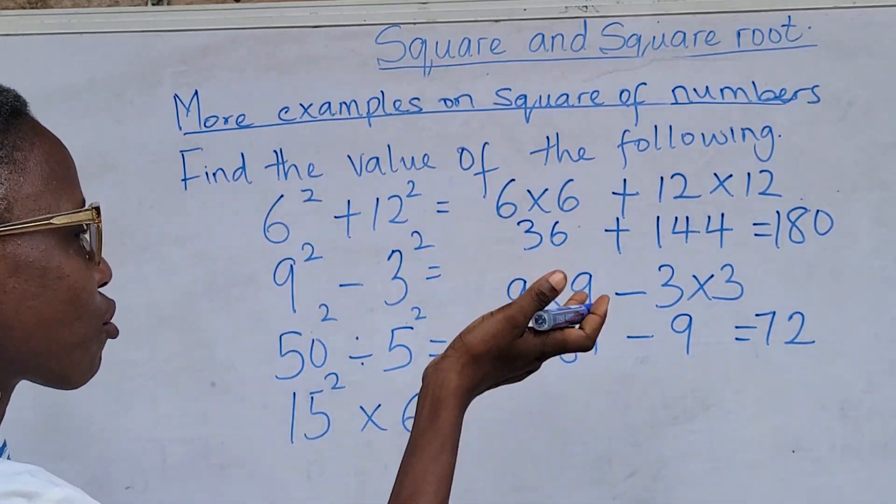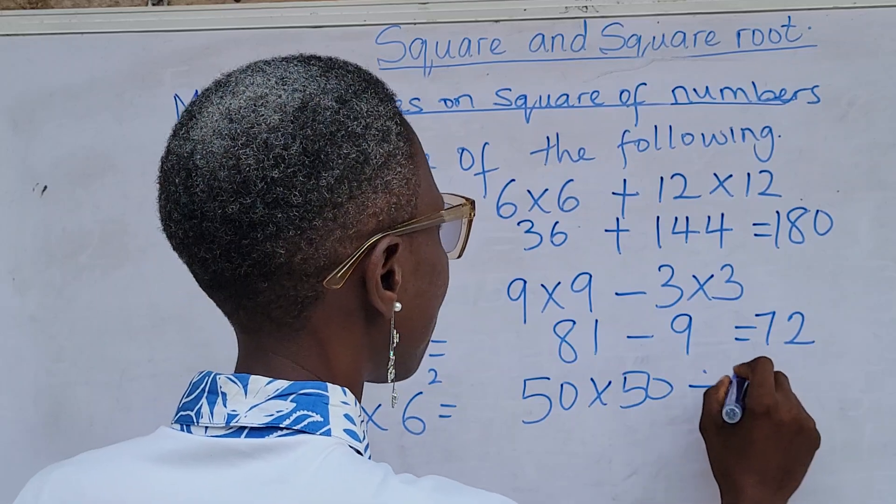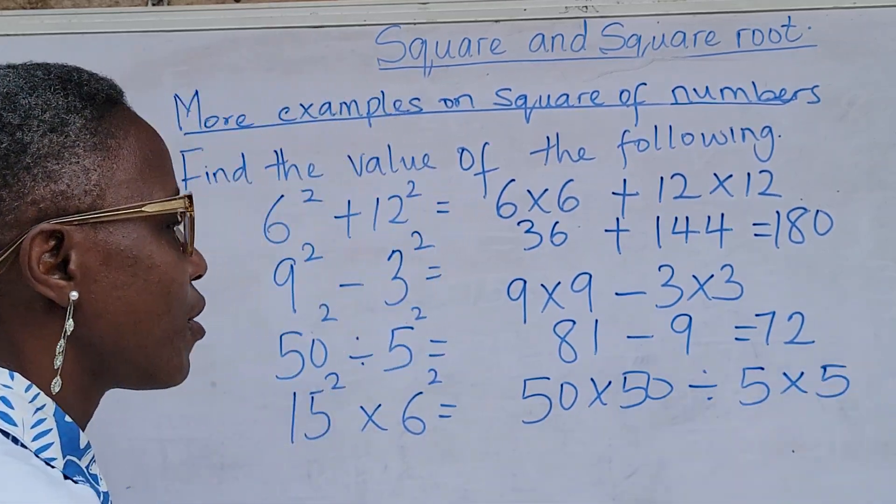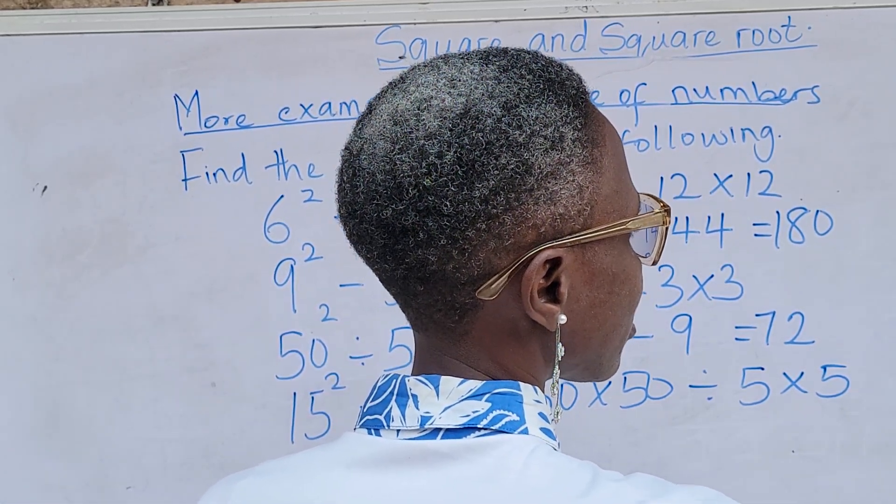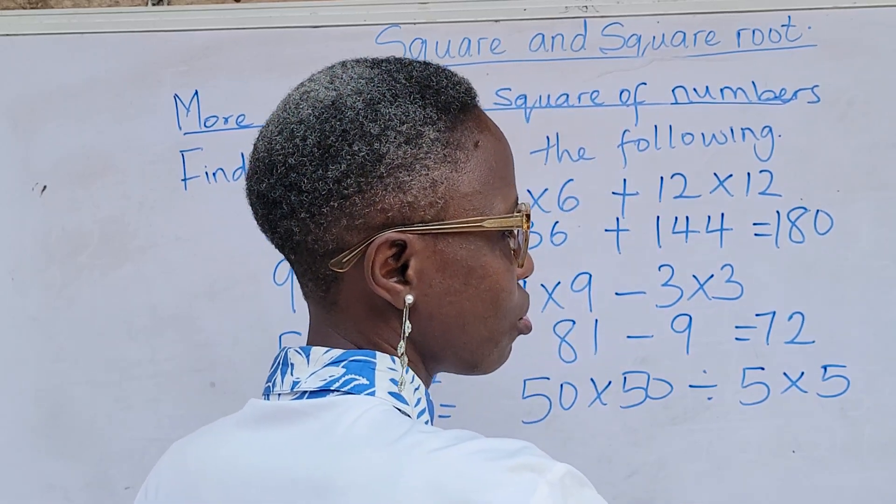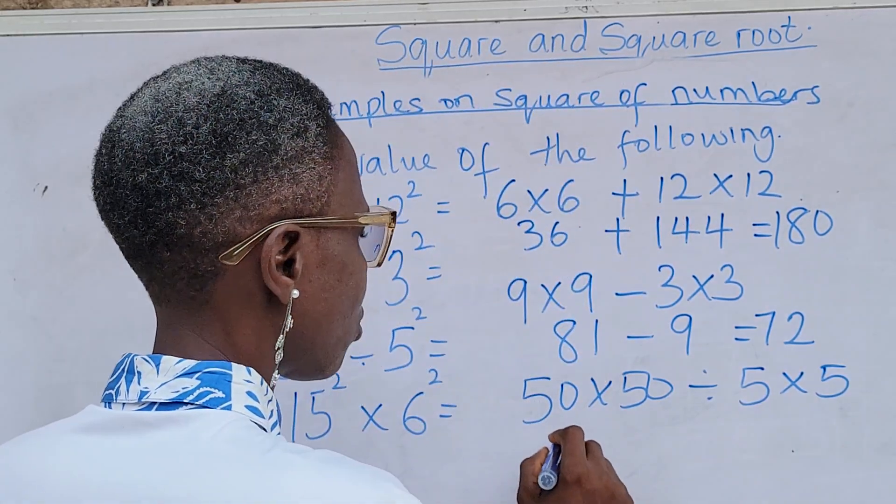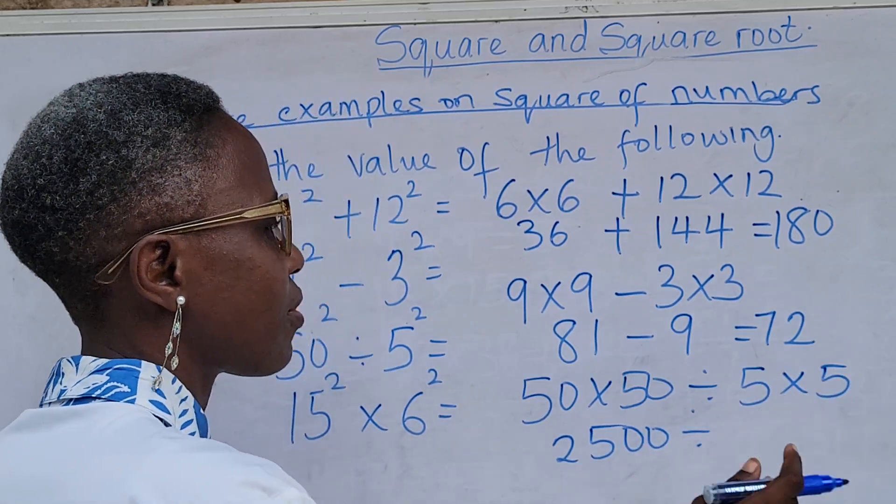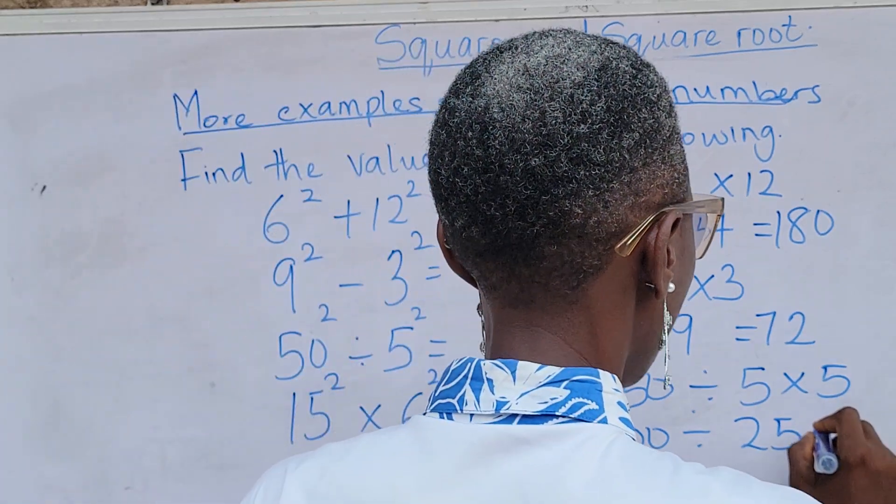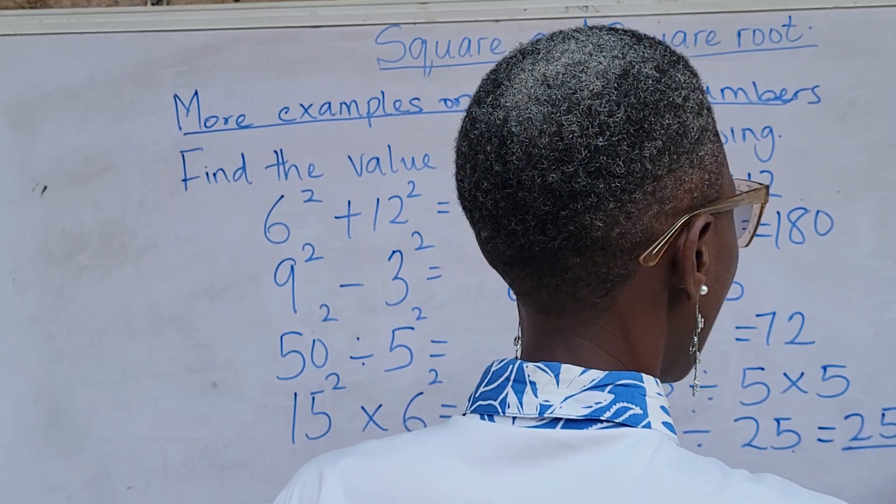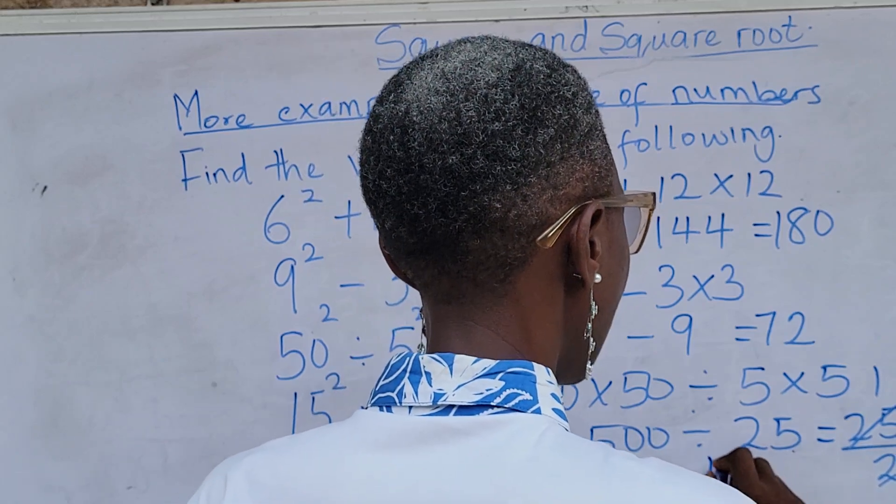We can solve questions like this. And then, the next one is 50 times 50 divided by 5 times 5. 50 times 50 is 2500. Remember, I told you you could watch my video on multiplication of 2 digits by 2 digits. So, we have 2500 divided by 5 times 5 is 25. So, what we are left with is just to have our division, and that's going to be 2500 divided by 25. 25 can cancel 25, that's 1. Then, you have 00. And the answer will be 100.